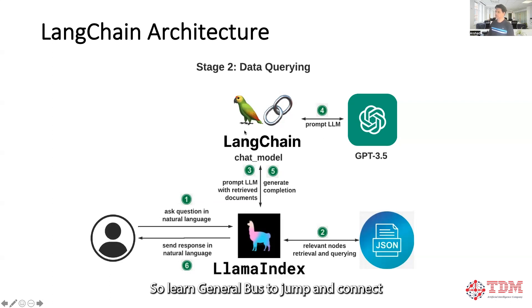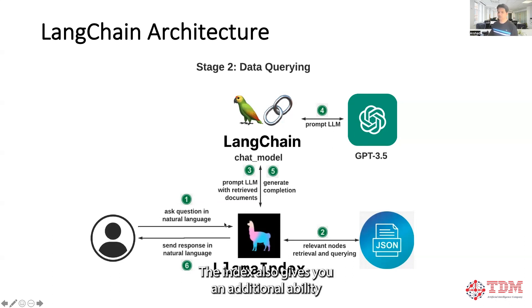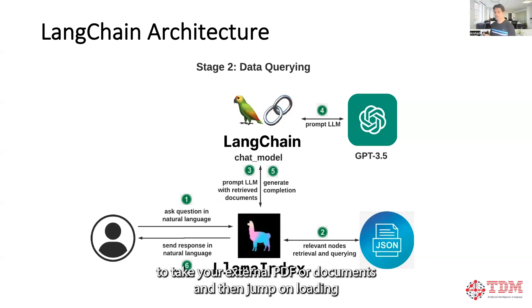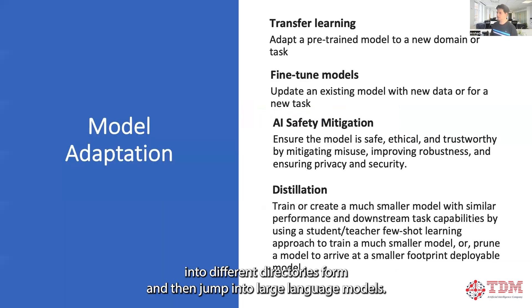LangChain helps us to connect into large language models like ChatGPT. LlamaIndex also gives you an additional ability to take your external PDFs or documents, convert them into vectorized form, and then jump into large language models.